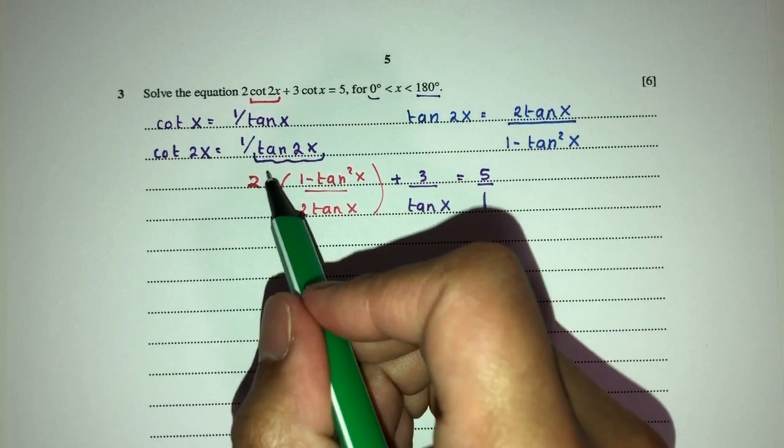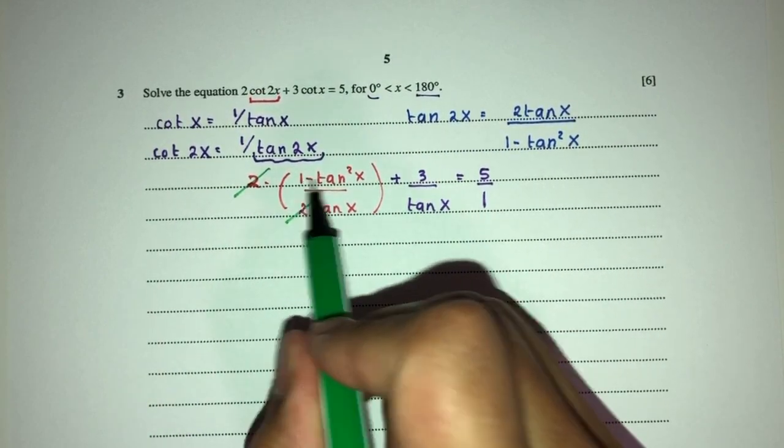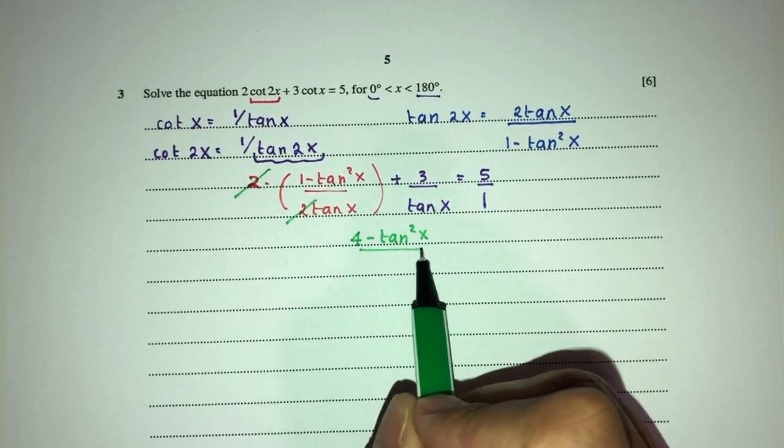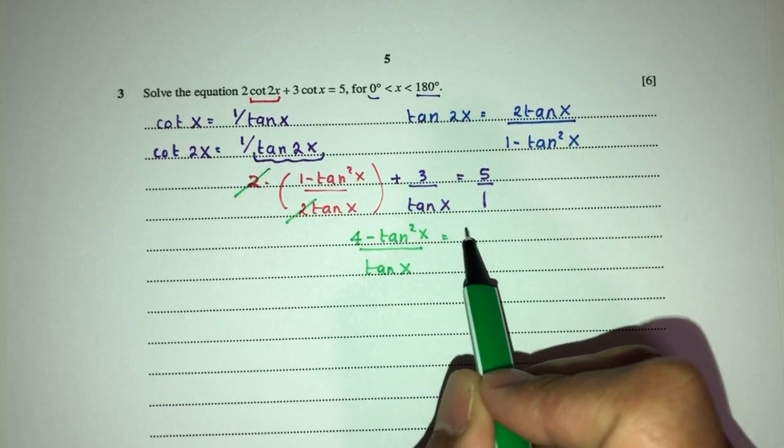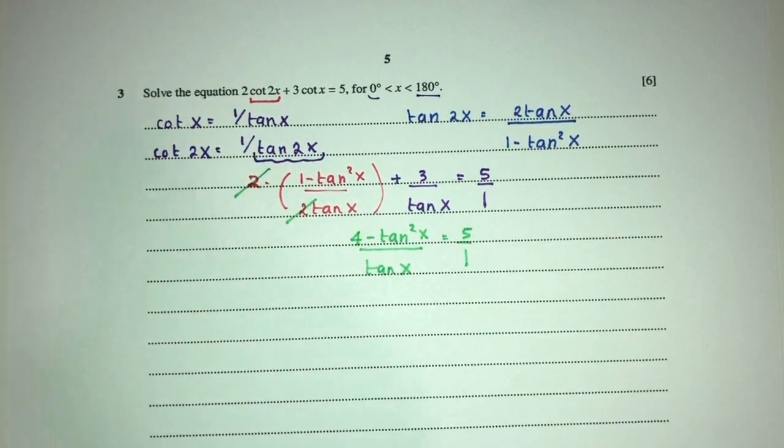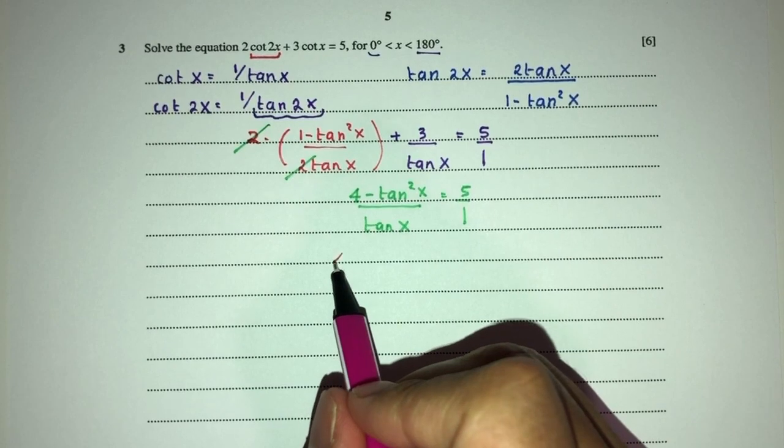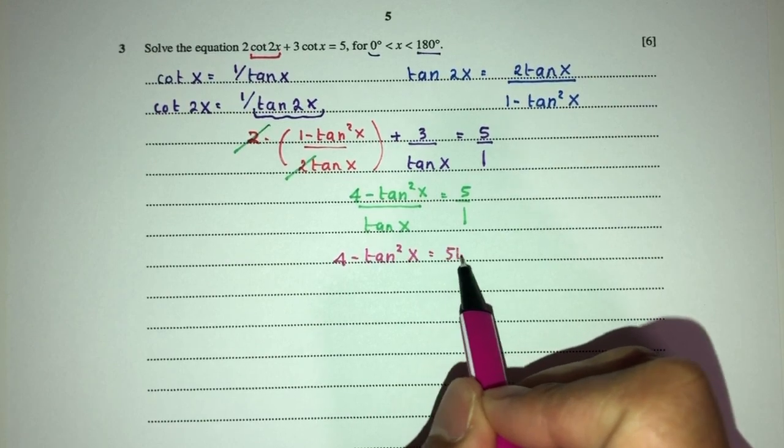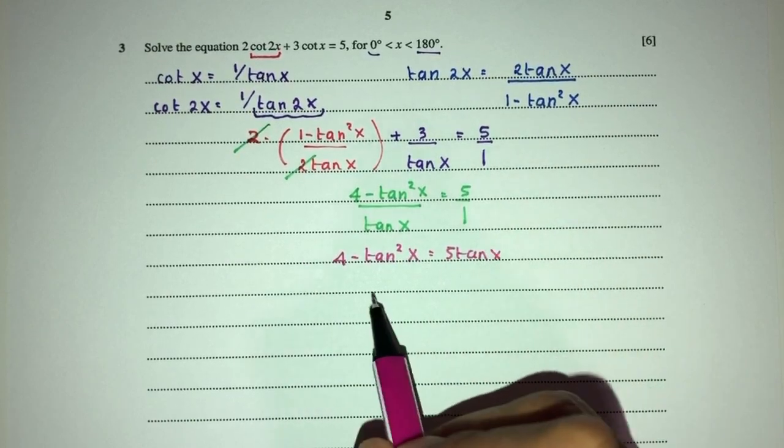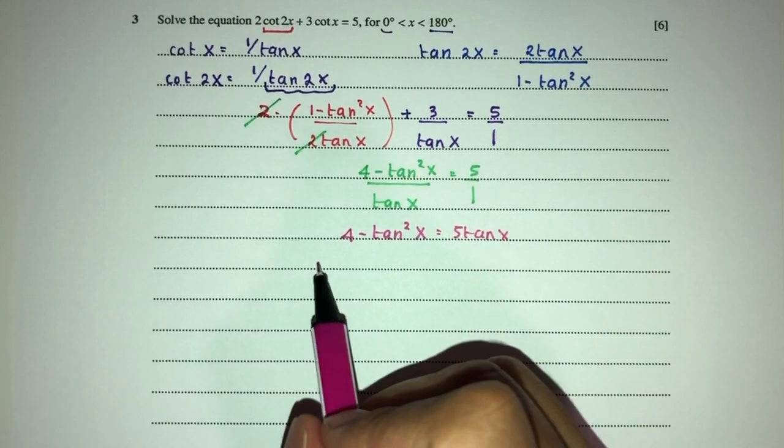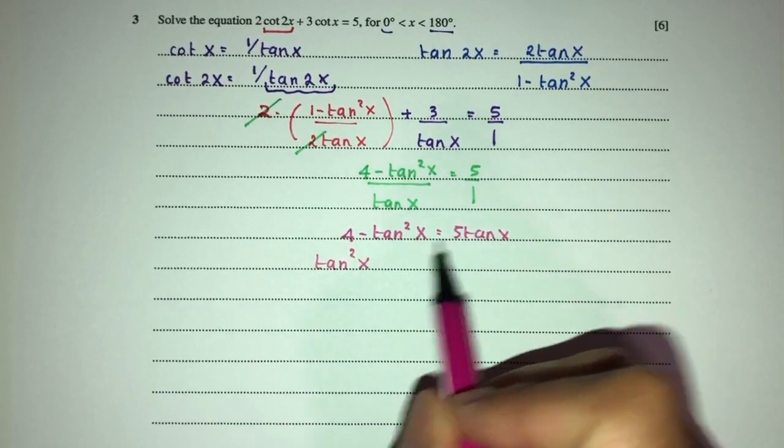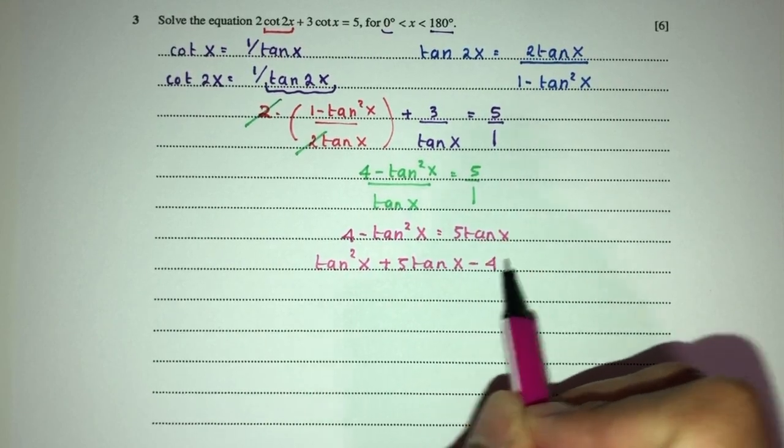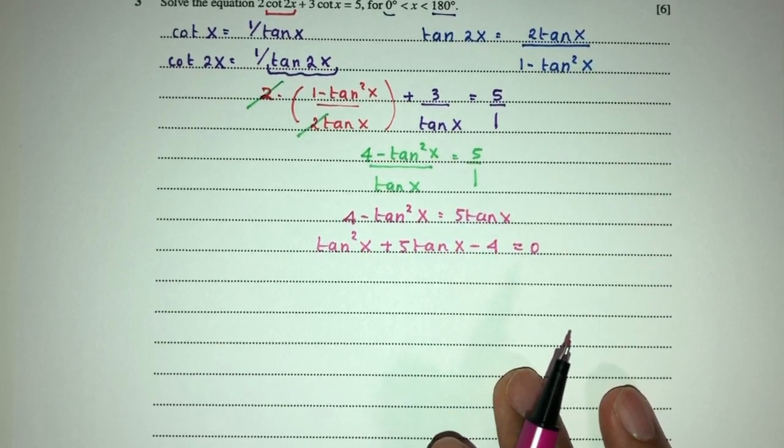Which is this one and this is outside. Now plus 3 cot x is 1 over tan x. Is equal to the value of 5. Now simplify, you will have what? This and this will cancel out. So you will have 1 plus 3 should be 4 here minus tan square x over the value of tan x. Is equal to 5 over 1. Now we can cross multiply. You will have 4 minus tan square x is equal to 5 tan x. Send this over here. Everything on to one side. You will have tan square x. This will be plus 5 and minus 4. That will be 0. So simplify. Let's see what happens.